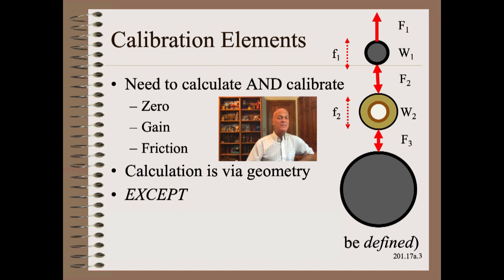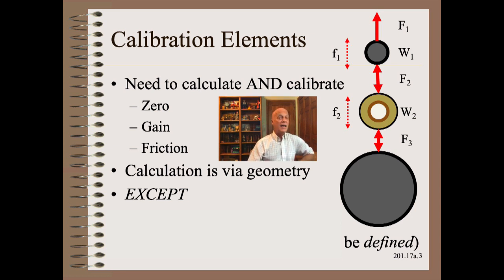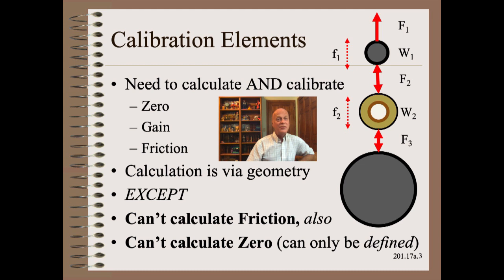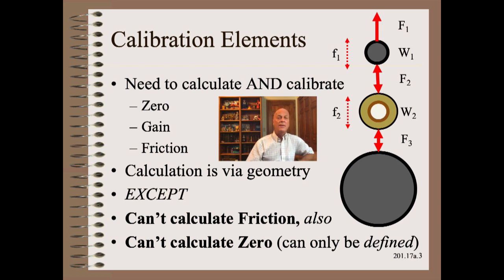While your winder may look different than this picture, the principles are exactly the same. The challenge of calibrating is that while gain can be calculated from weights and geometry, friction cannot ever be calculated — friction can only be measured. Also, we can't calculate zero without knowing friction, which must be measured. Finally, we need to define what we mean by zero, which is more complicated than simply saying it is F1 or F2. For all of these reasons, we must check our simple calculations via measurements in the field.